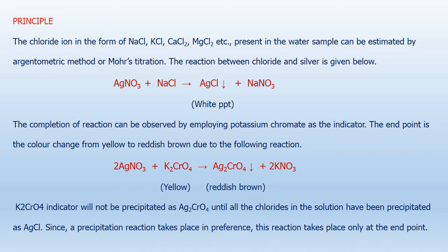The reaction between chloride and silver is: AgNO₃ plus chloride ion present in water react together to form AgCl, which is a white precipitate. We can remove the chloride ion by forming silver chloride precipitate, and sodium nitrate is also formed. On completion of the process, we cannot easily observe the change because the white precipitate is present in the conical flask.